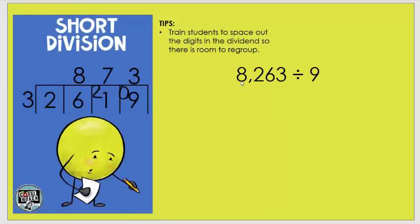So we're gonna practice the problem 8,263 divided by 9. So you just want to have the students write out the problem, and I'm going to leave enough space in between each digit to carry any leftovers that we might have. So I'm setting it up like this. I've even had students divide their digits like this, and that helps them to keep everything sorted.